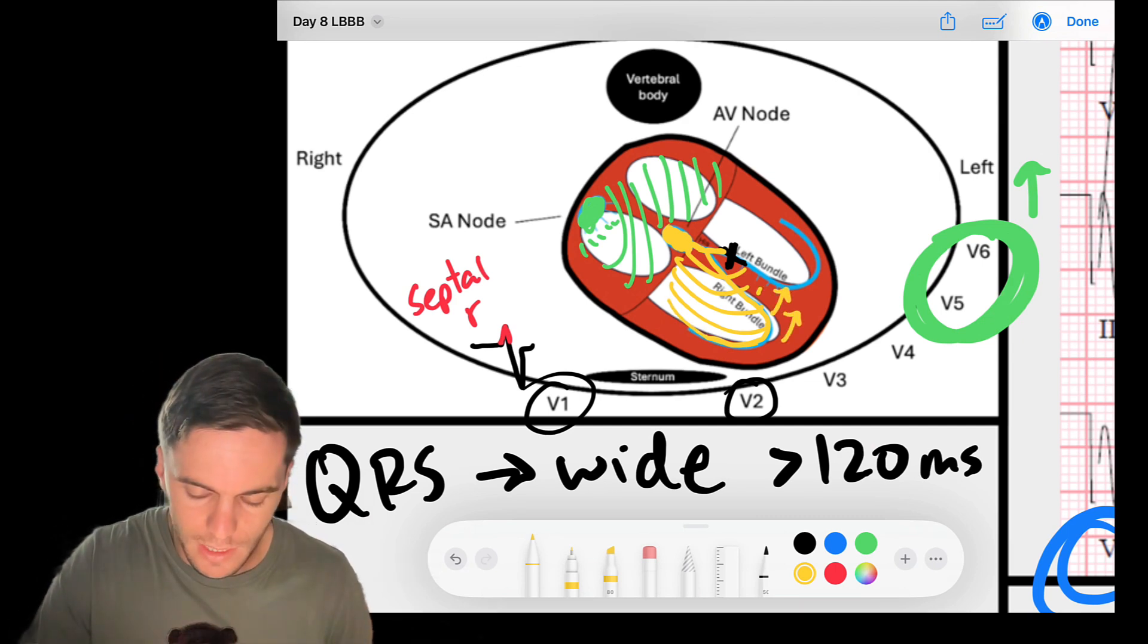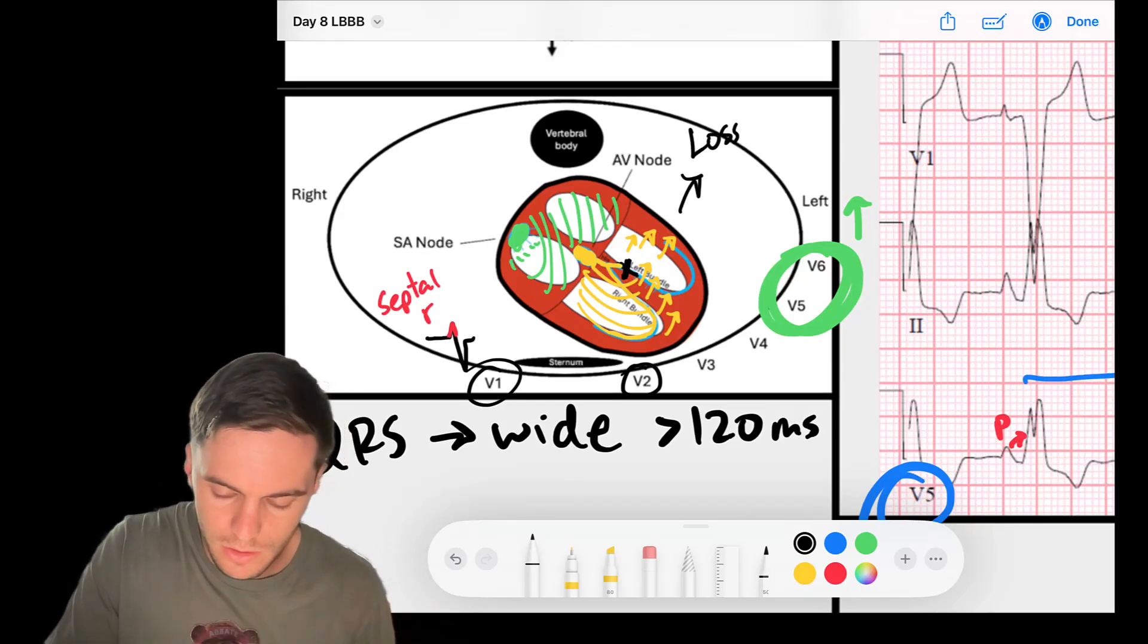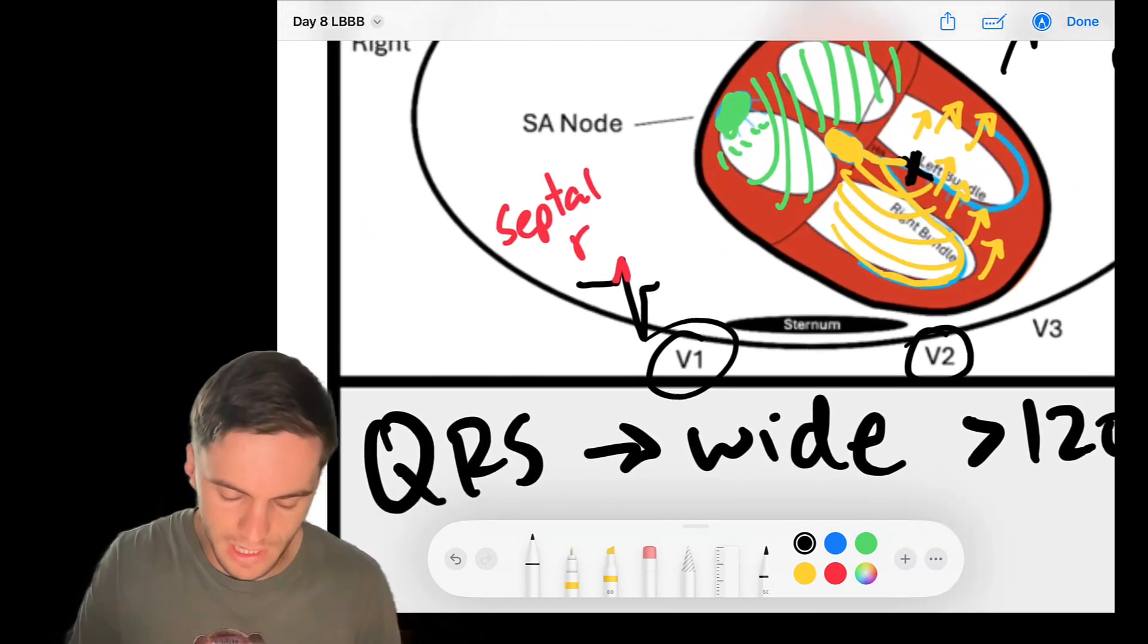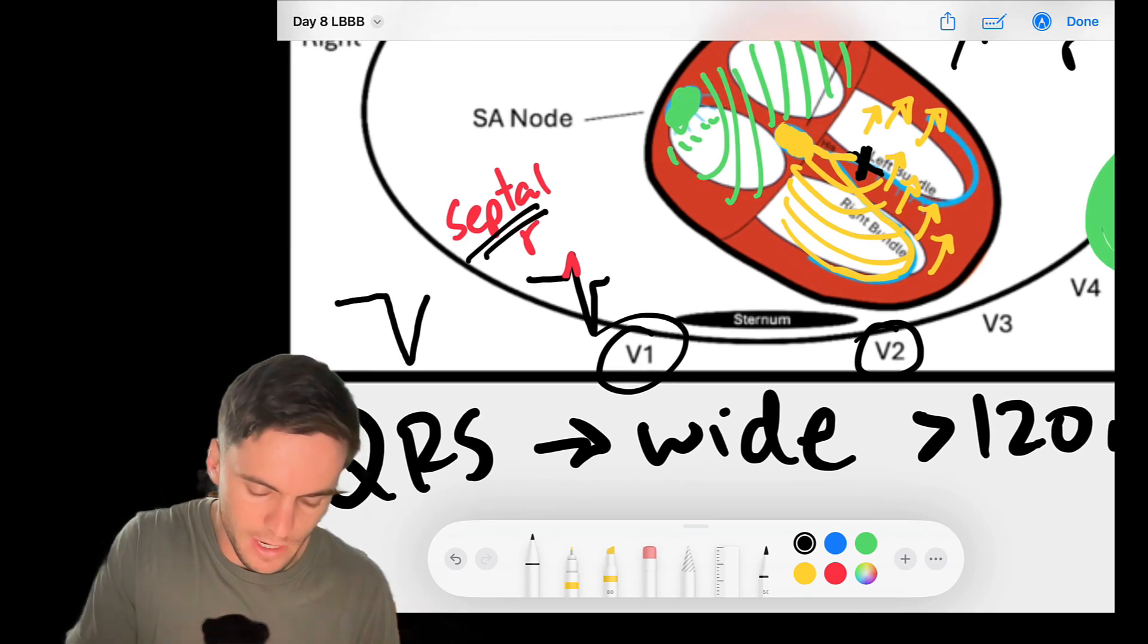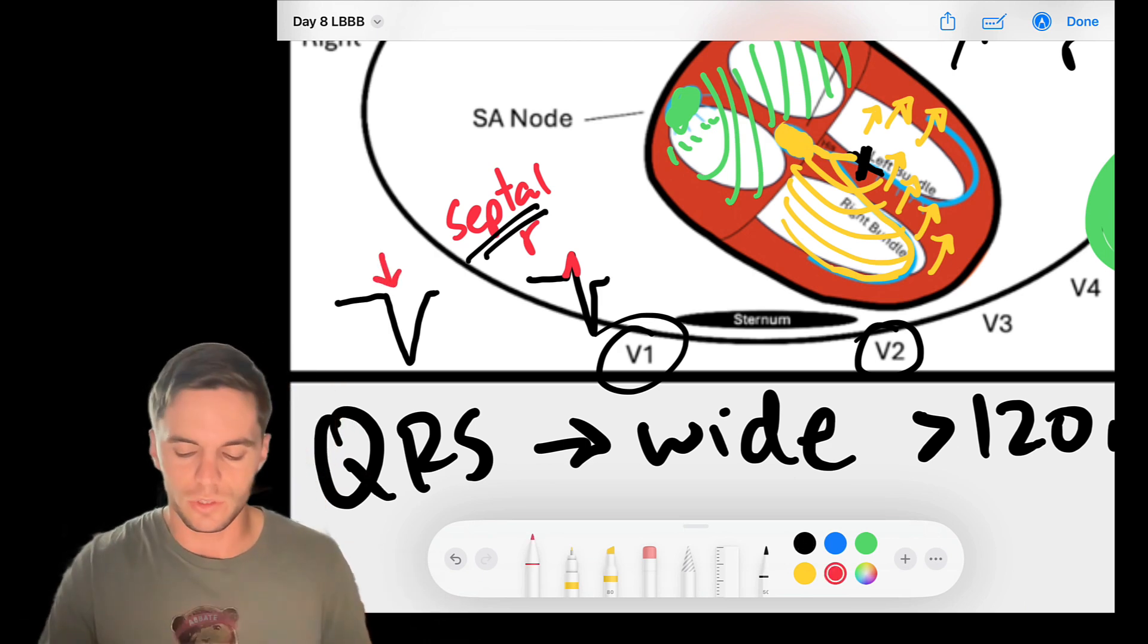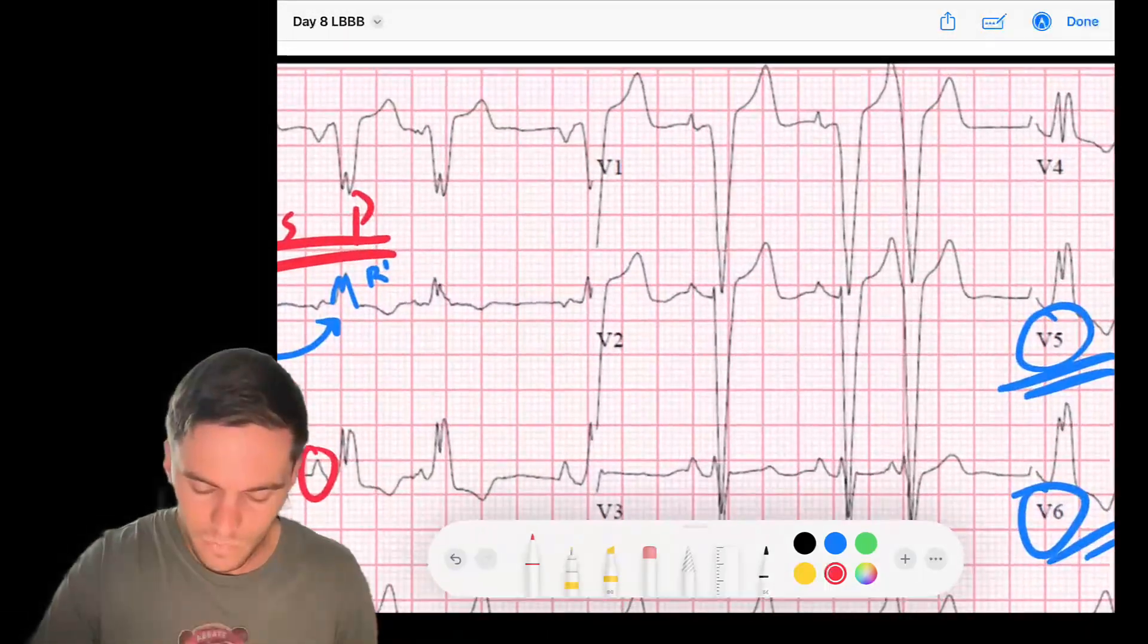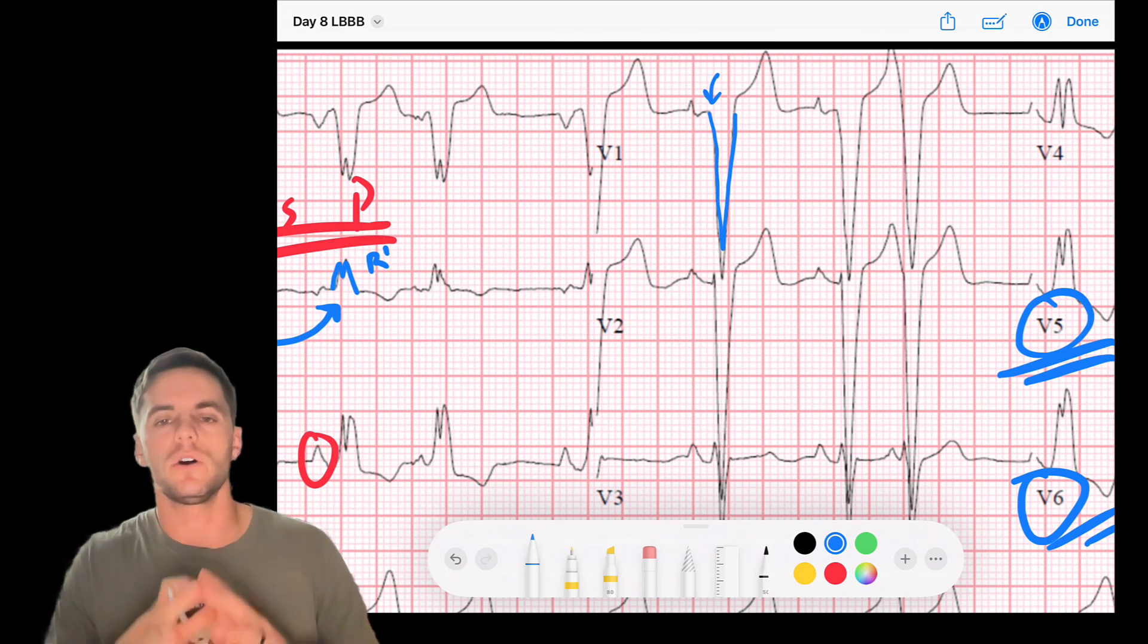So in a left bundle branch block, what I'm getting at is we also get the loss of the septal R wave. So we will no longer see that septal R wave. What we'll actually see is just a straight negative QRS complex where that septal R wave is no longer there. So look at V1 in this EKG. My QRS complex has no septal R wave. There is no septal R wave here. And that is how you can also determine the fact that this is a left bundle branch block. It's more evidence.